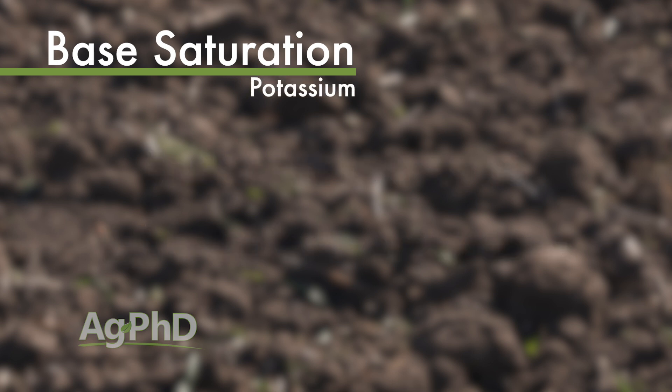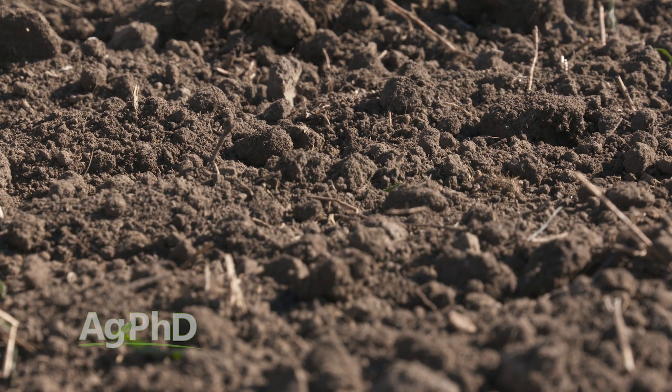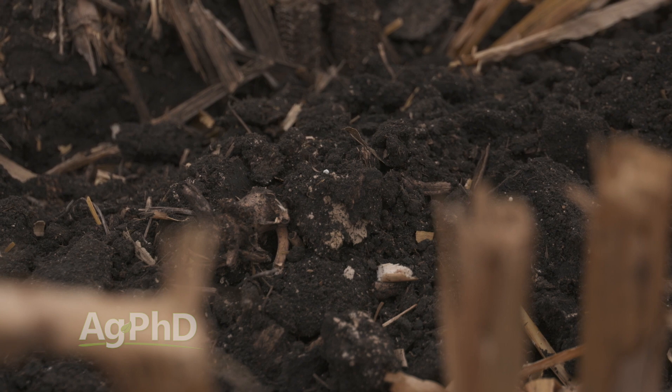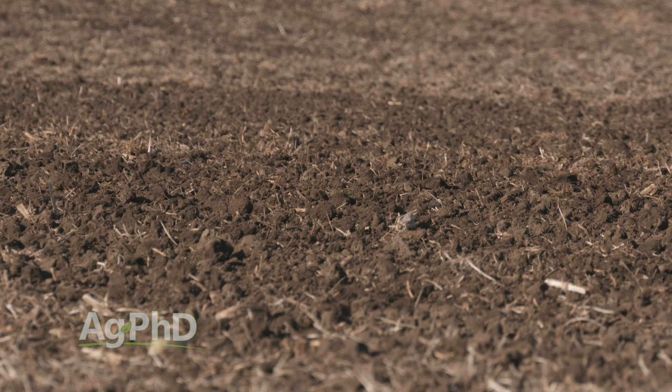Finally, for potassium, we really want to see 4% to 8% base saturation. Many times we're looking at parts per million on a soil test, and here's where balance comes into play. If you have a really heavy soil, it takes a lot more parts per million to get potassium into your plant. In a lighter soil you have far less parts per million of calcium and magnesium, so it's easier for your plants to find that potassium. When you've got a heavy soil with a large amount of calcium and magnesium, it's hard to find that potassium, so we need a higher parts per million number in those heavy soils.